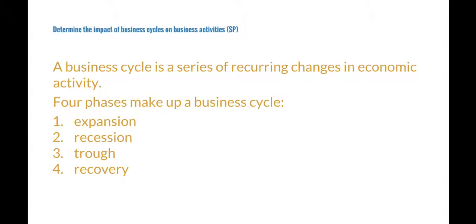Recession can last at least two quarters, and companies reduce their output while consumers have less money to spend on goods and services. A prolonged recession is called a depression. A trough is the low point in a business cycle — it marks the beginning of the transition from recession and depression to recovery when signs of economic growth are near. In the recovery phase, demand increases and businesses respond by hiring more workers and supplying more goods.